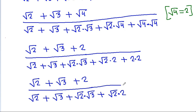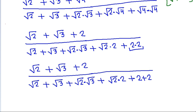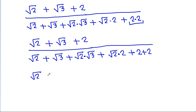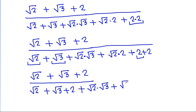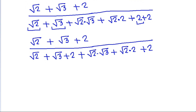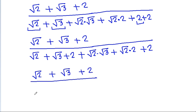Continuing to simplify: √2 times 2 plus 2 equals 2 plus 2, so we collect like terms. The expression becomes (√2 + √3 + 2) divided by (√2 + √3 + 2).